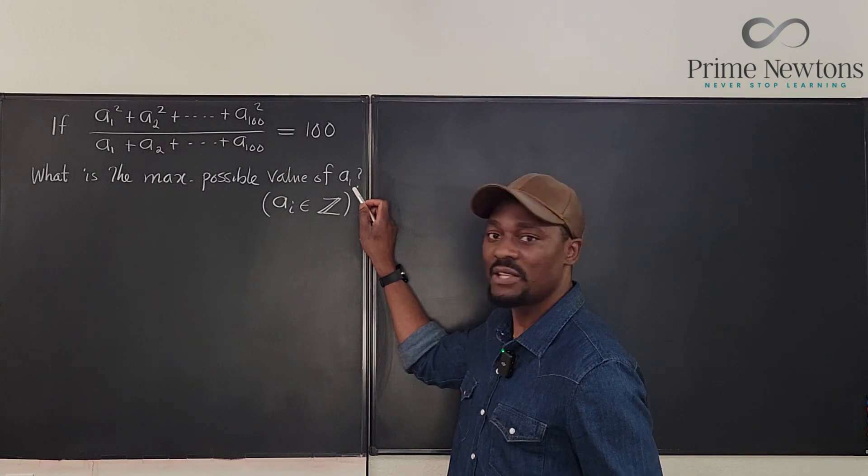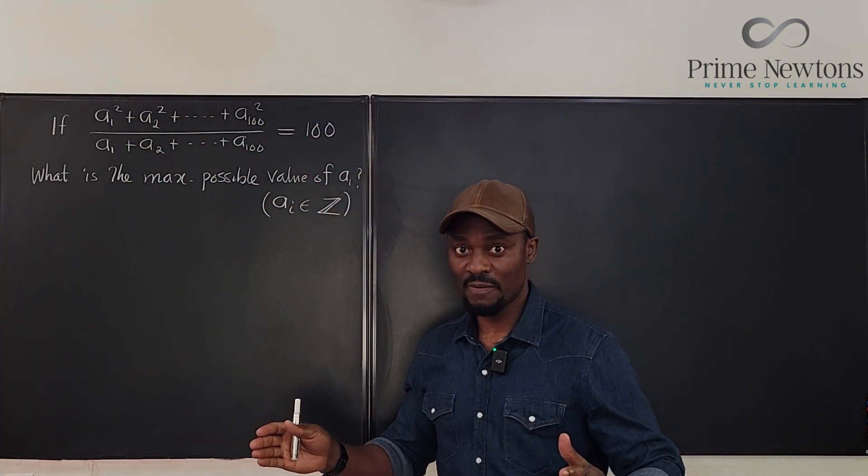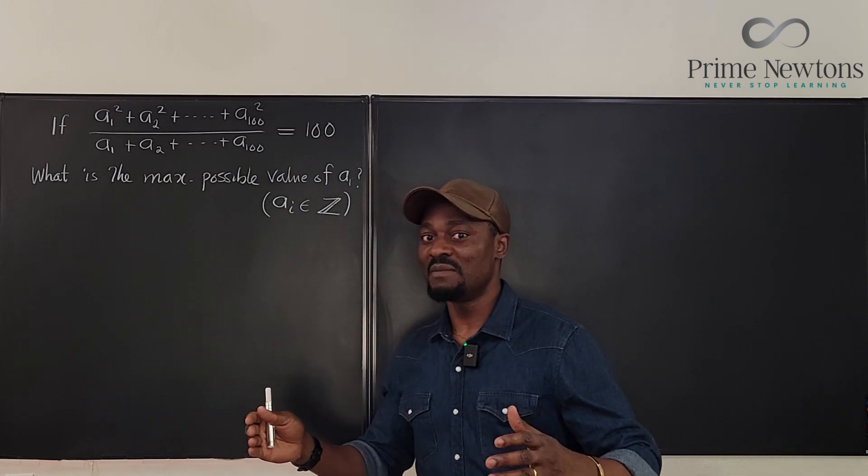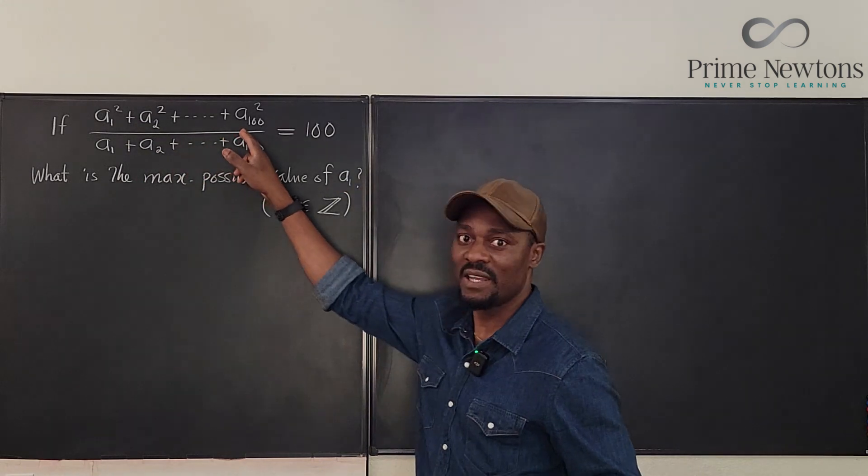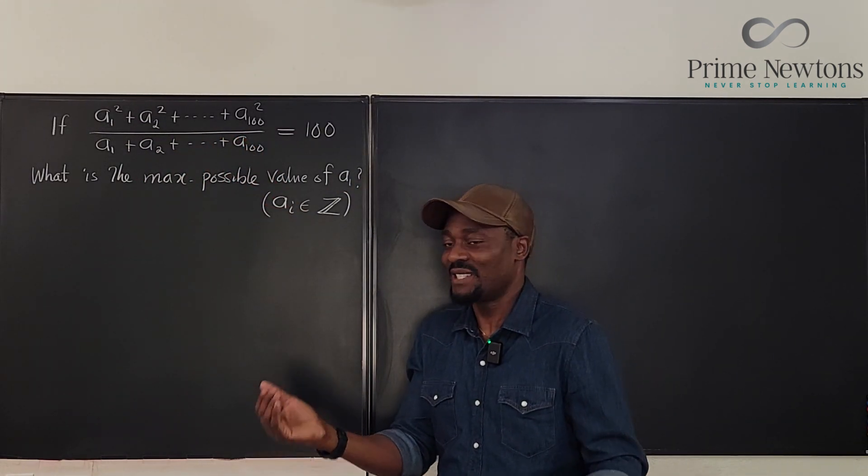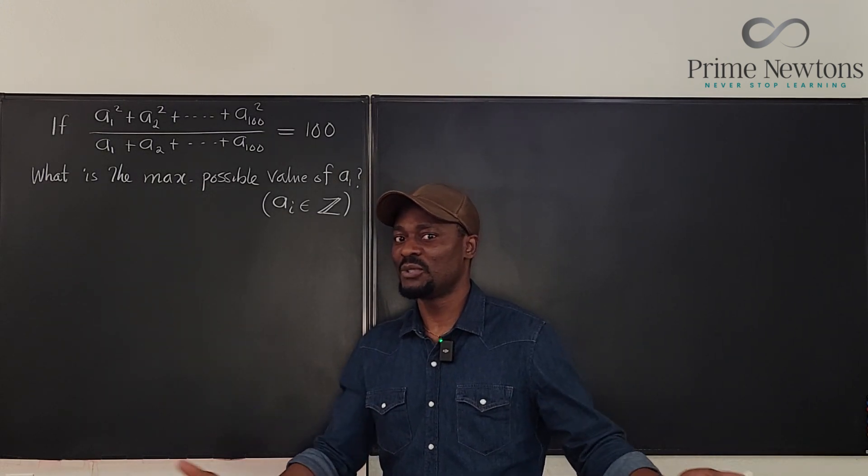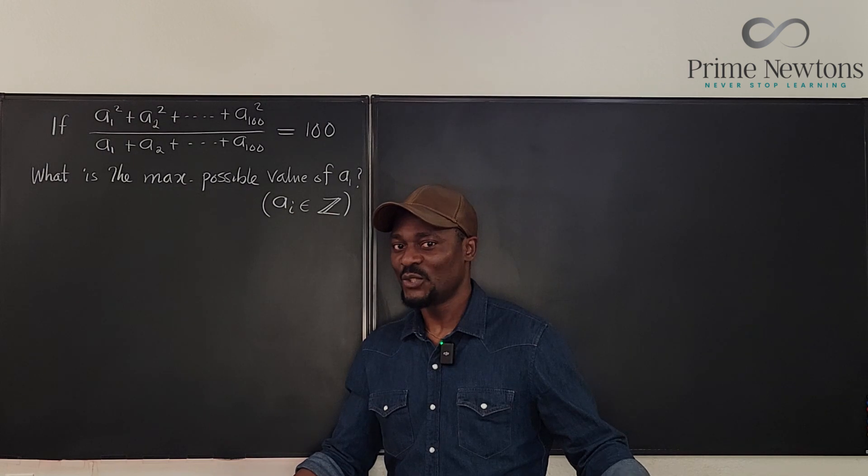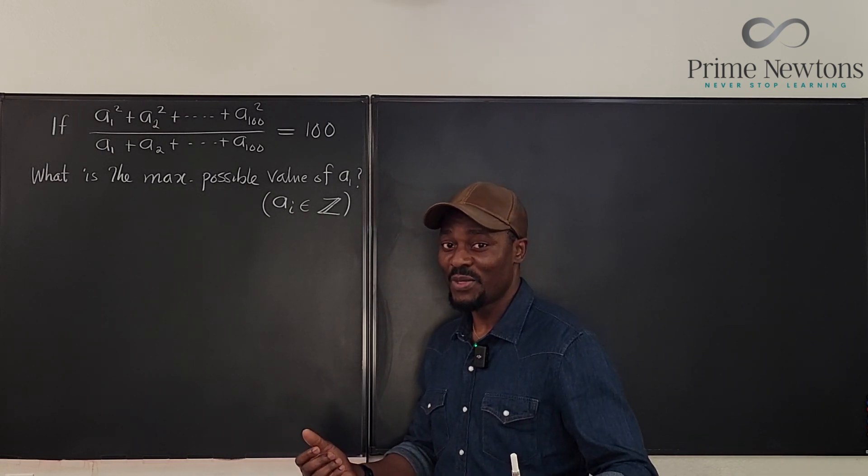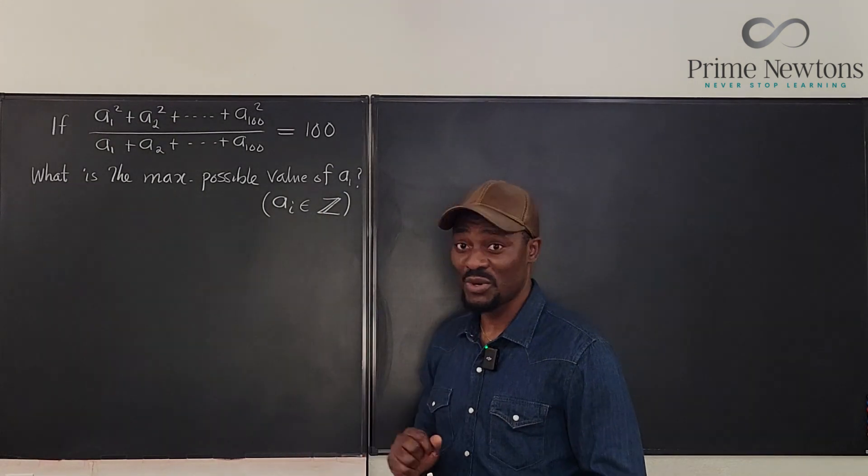Because what I thought to myself is, if I want to find the maximum value of A sub 1, I can assume everything here, apart from A sub 1 is 0. And when I do that, what makes me think that that would be the maximum? What if these numbers were all negative? Because if they're negative, then I don't know what to do about them. You can always know whether your numbers are positive or negative if you make them squares. And that's why the squares were on top.